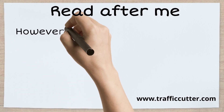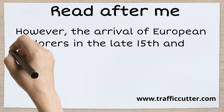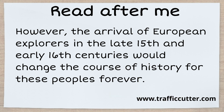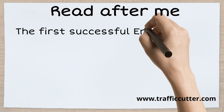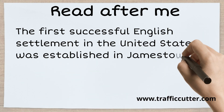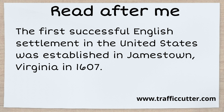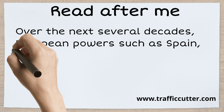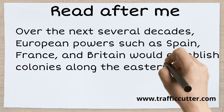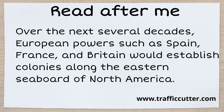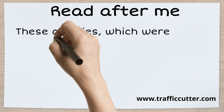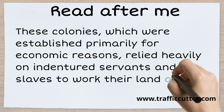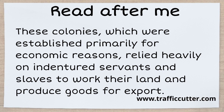However, the arrival of European explorers in the late 15th and early 16th centuries would change the course of history for these peoples forever. The first successful English settlement in the United States was established in Jamestown, Virginia in 1607. Over the next several decades, European powers such as Spain, France, and Britain would establish colonies along the eastern seaboard of North America. These colonies, which were established primarily for economic reasons, relied heavily on indentured servants and slaves to work their land and produce goods for export.